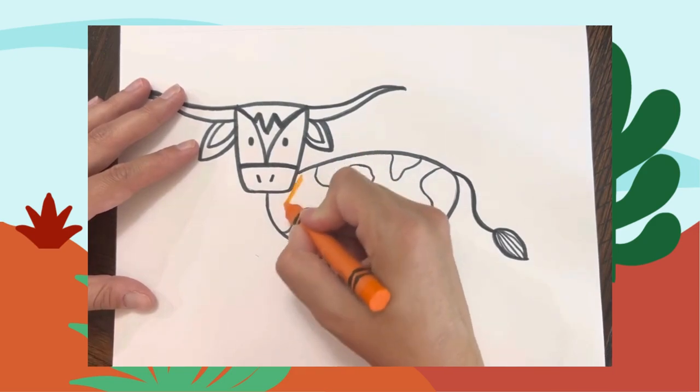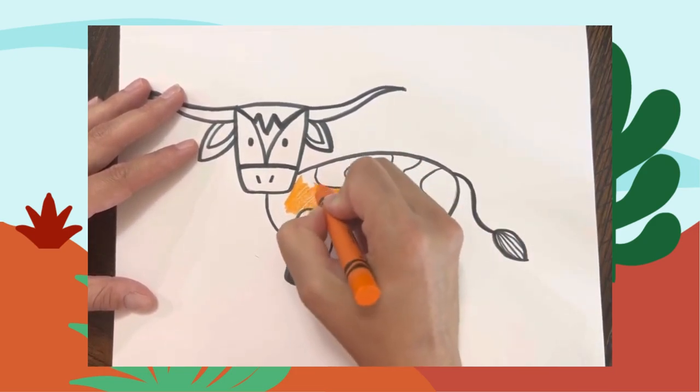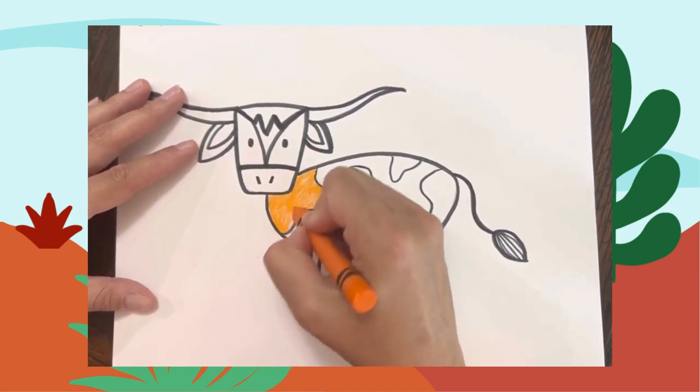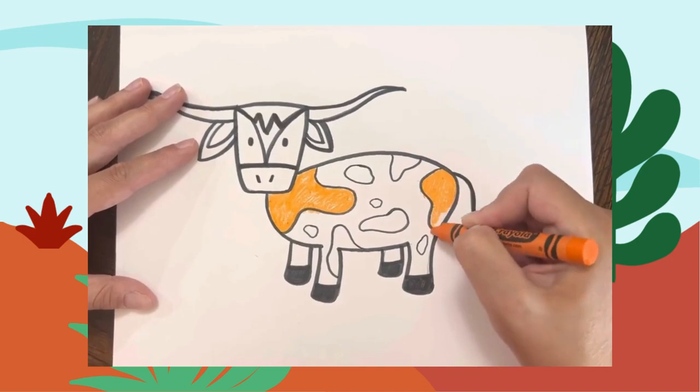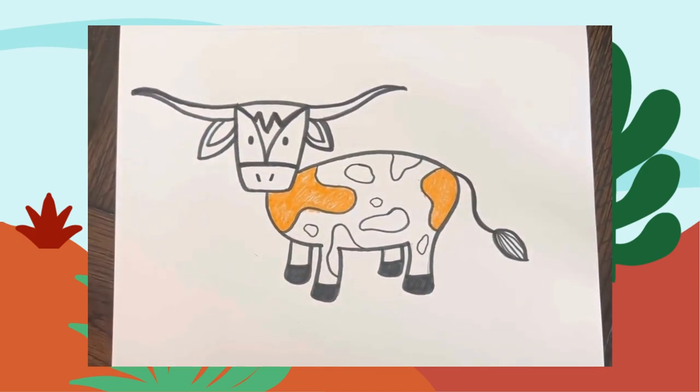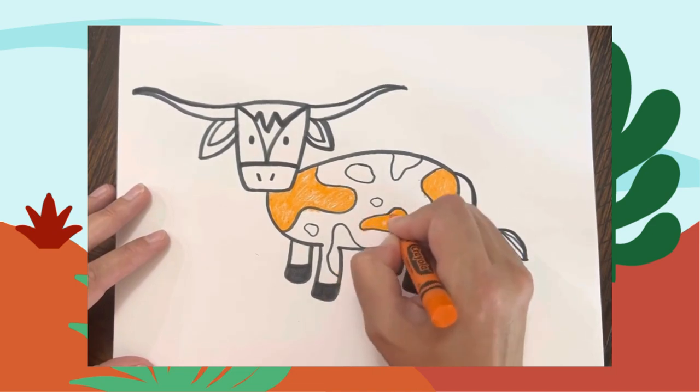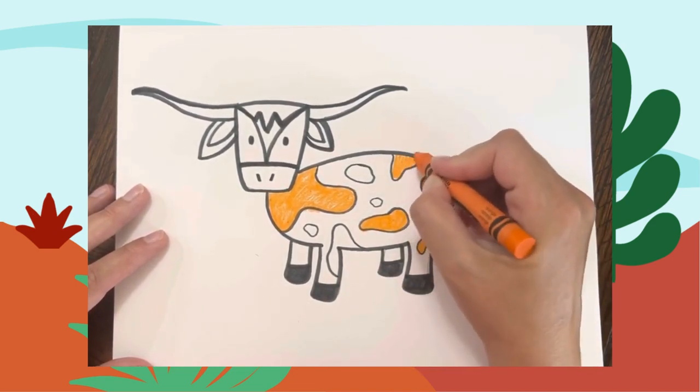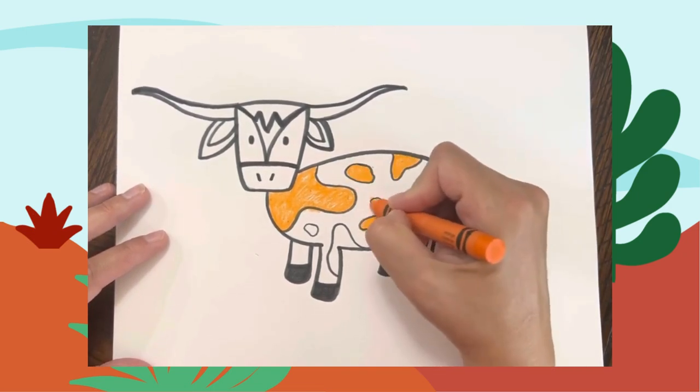All right, I'm going to color my longhorn similar to the picture that we saw of the real longhorn photograph, and I'm going to make his spots a darker orange color. You can make your spots any color you want; it does not have to match mine.